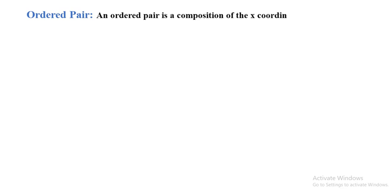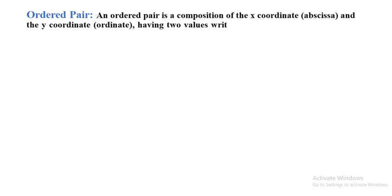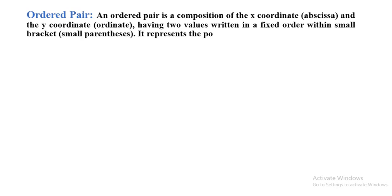Okay, let's talk about ordered pairs. An ordered pair is a composition of the x-coordinate and y-coordinate, having two values written in a fixed order within a small bracket. The ordered pair always represents a point on the Cartesian plane.